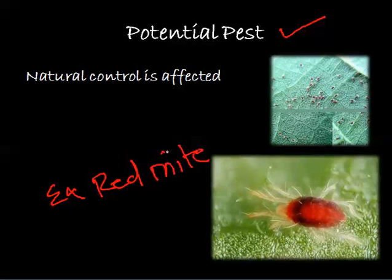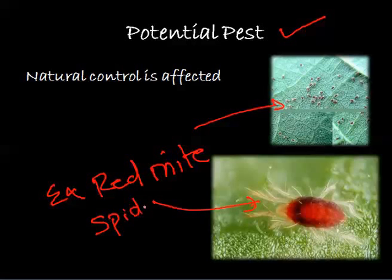...the population of this mite increases and causes injury to fruit plants. Here you can see the red spider mite normally found in fruit trees, and the main reason is that natural control gets reduced or is affected by some chemical control, causing the population of this red spider mite to increase. These are the three categories we have discussed, and next time we'll discuss more about pests and related categories. Thank you.